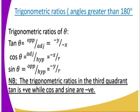We move to the third quadrant — these are angles greater than 180 — and that is where we have theta. Tan theta is opposite over adjacent, which is negative y divided by negative x, and this gives a positive result. Cos theta is adjacent over hypotenuse, which is negative x divided by r. And sin theta is opposite over hypotenuse, which is negative y divided by r, so that is negative. In the third quadrant, tan is positive while cos and sin are negative.